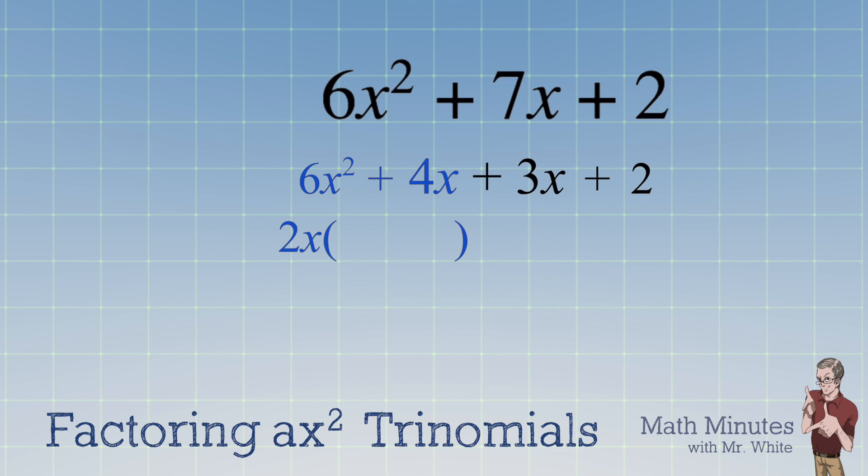Of course, it's 2x. And then inside the parentheses, we write what's left behind after factoring out the GCF, which is 3x plus 2. We've rewritten the first two terms, 6x squared plus 4x, as 2x times the quantity 3x plus 2.